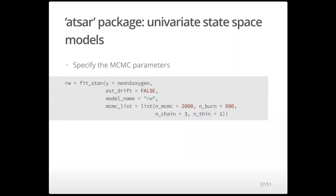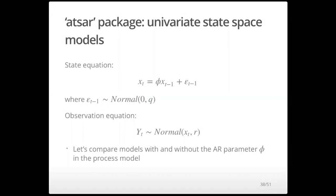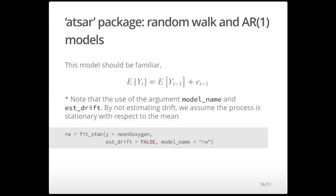One downside is that we can't do a good job making predictions for time steps where we don't have consecutive observations — this is a process-error-only model. It doesn't include the state-space component, which we need to estimate what the true state of nature is given our data. So we want to extend this to include that state-space component. We now have the state equation where the true oxygen at time T is the true unobserved oxygen one time step before, plus an autoregressive parameter phi, plus some process error noise. The observation error equation links our oxygen measurements to our predicted states.